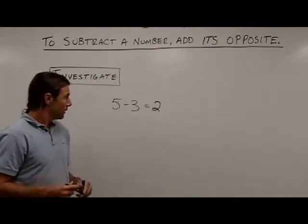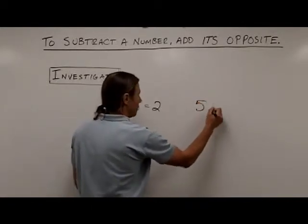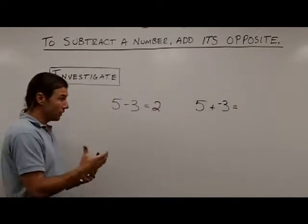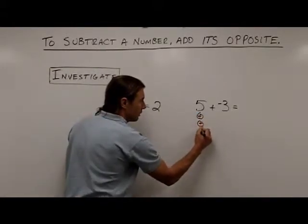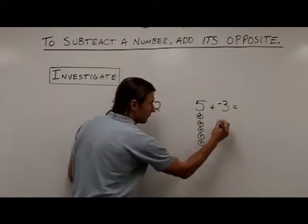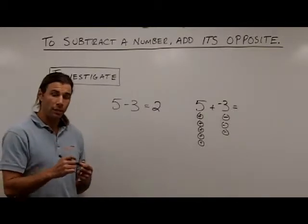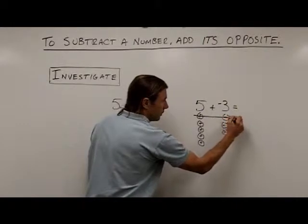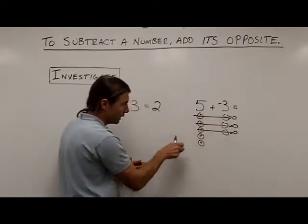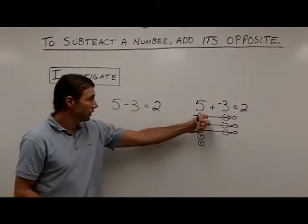Now let's investigate adding the opposite. Instead of subtracting 3, we're now going to add 3's opposite, so the problem would look like this: 5 plus negative 3. If we do the calculation, I have 5 positives and 3 negatives. Positives and negatives are opposites, and every time I combine a positive with a negative, it gives me 0. So when I add 5 positives to 3 negatives, I'm going to have 2 positives left over — my answer is 2.